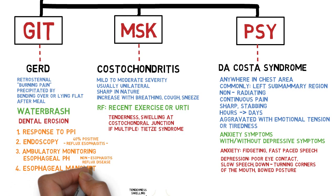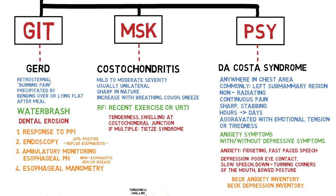Costochondritis is a clinical diagnosis; thus, there is no need for specific diagnostic investigation. However, we may want to do an ECG and chest X-ray to be safe and rule out life-threatening causes of chest pain. Likewise, this also applies to Da Costa syndrome. Since anxiety and depression are also part of the symptoms, we may want to conduct a psychological assessment using Beck's Anxiety or Depression Inventory.